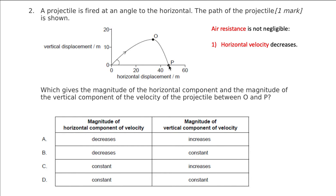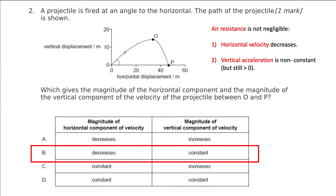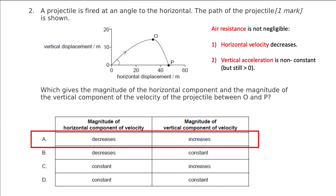We've got to think about the vertical component of the velocity between points O and P. Again, regardless of the air resistance, the vertical velocity at the top is always zero, and so therefore our vertical velocity must have increased when we're at the bottom. The vertical acceleration is non-constant, but it's still greater than zero in magnitude, and so my magnitude of vertical velocity is going to increase at this point.